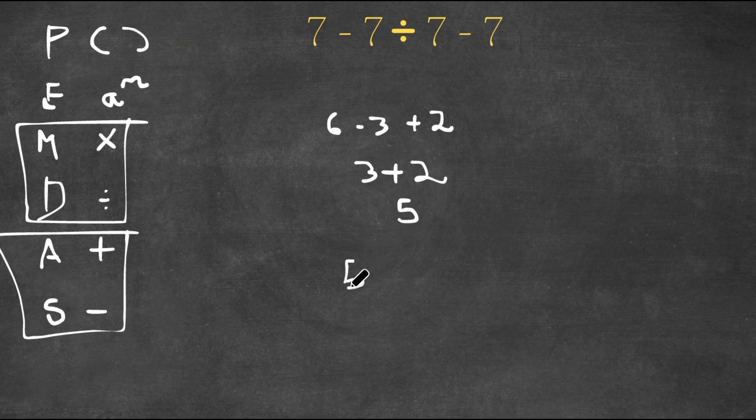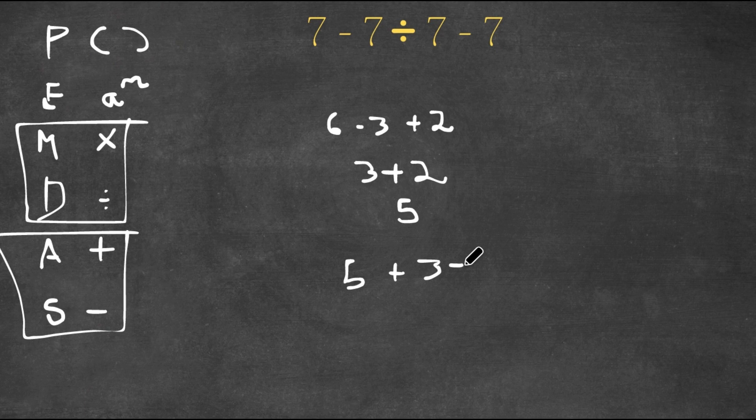Now in this case, if I have 5 plus 3 minus 7, I would do addition first because it comes first, right? So 5 plus 3 is 8, and 8 minus 7 is 1.